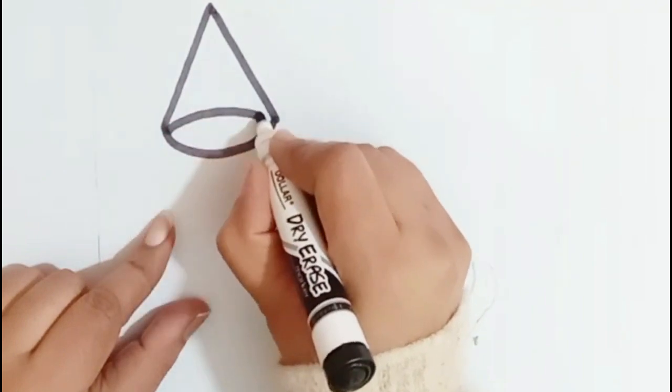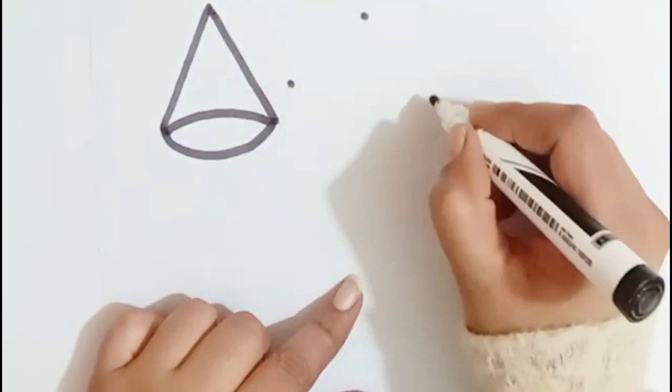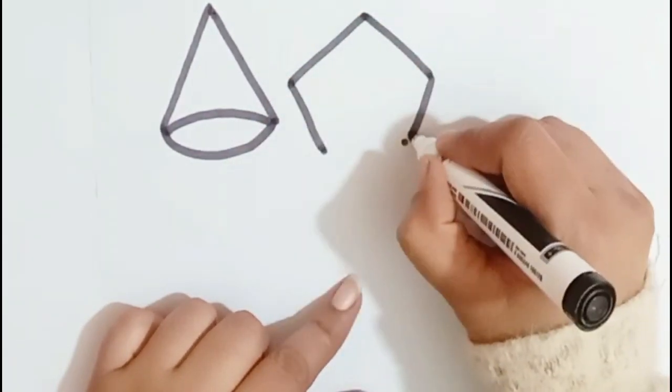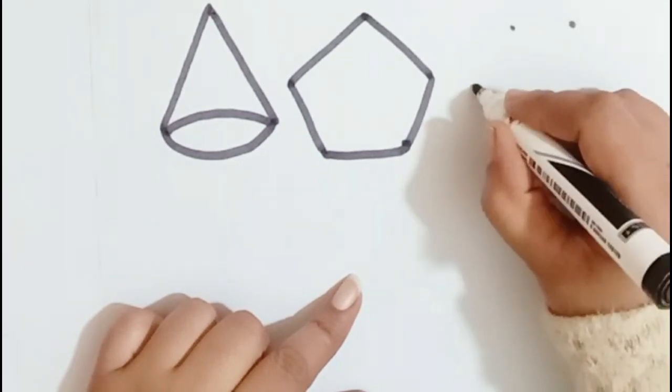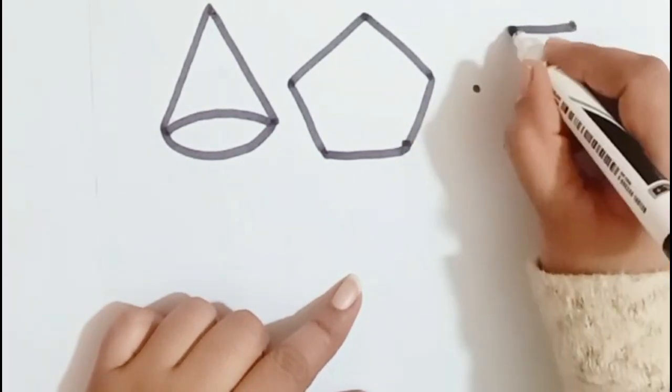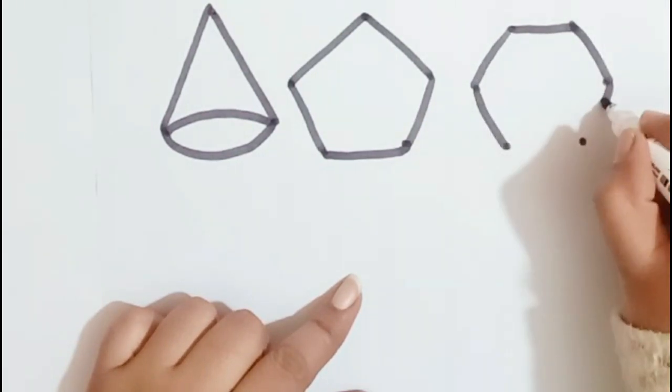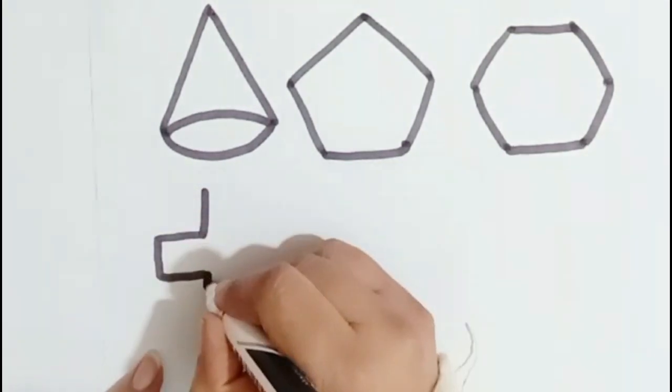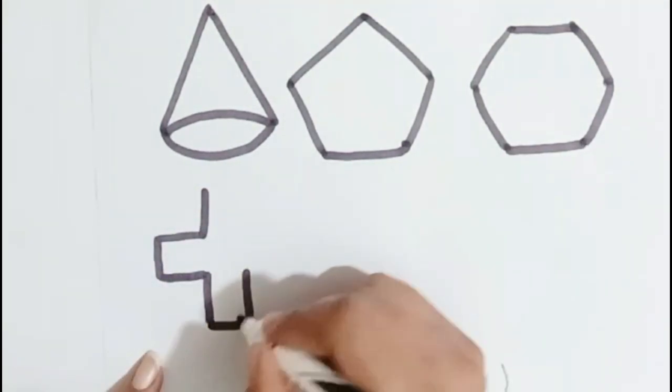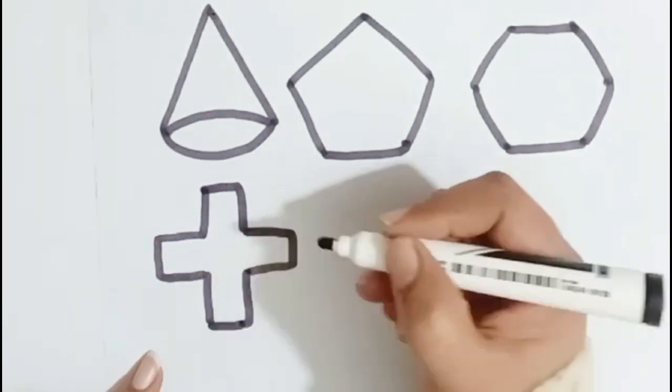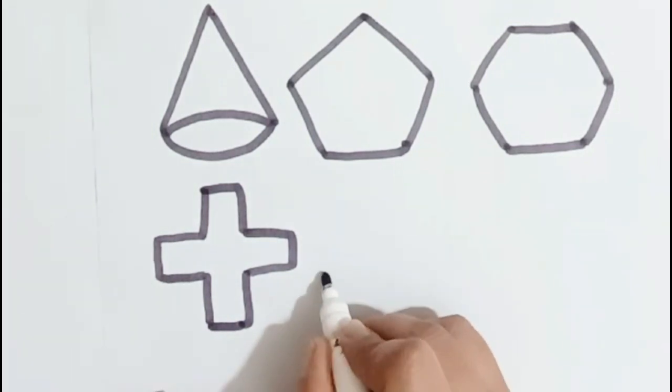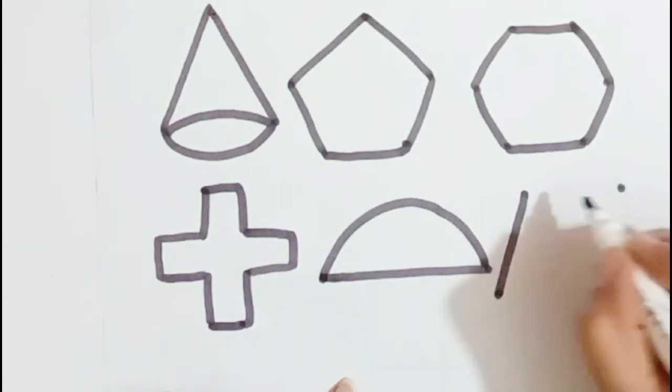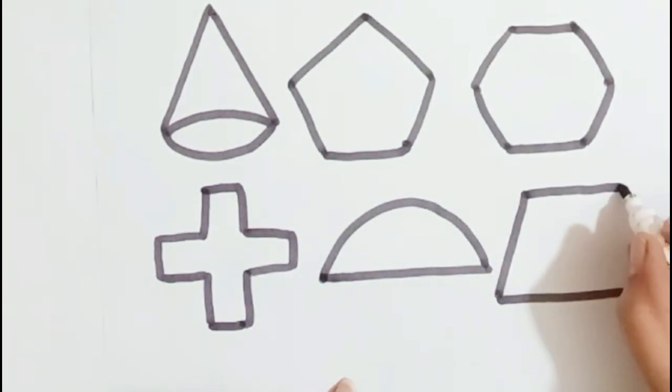This is a black color cone. Pentagon. Hexagon. Cross. Semicircle. Trapezoid.